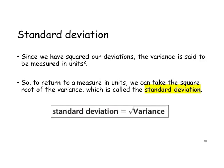Since we have squared our deviations, the variance is said to be measured in units squared. So, to return to a measure in units, we can take the square root of the variance, which is called the standard deviation. Standard deviation equals the square root of the variance.